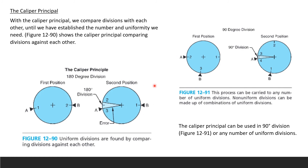A 90-degree division should form a perfect right angle. The perfect line is in the middle, but in reality you may see a division error. The difference and the offset from the 180-degree or 90-degree division show the division error present.